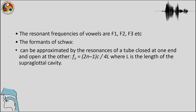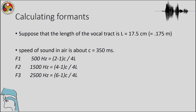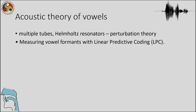The resonant frequencies of vowels are F1, F2, F3, etc. The formants of the schwa are approximated by a tube closed at one end and open at the other, where L is the length of the supraglottal cavity. The general acoustic theory of vowels is more complex — it assumes multiple tubes, Helmholtz resonators, and perturbation theory. Measuring vowel formants with linear predictive coding is a separate topic not covered in this lecture.